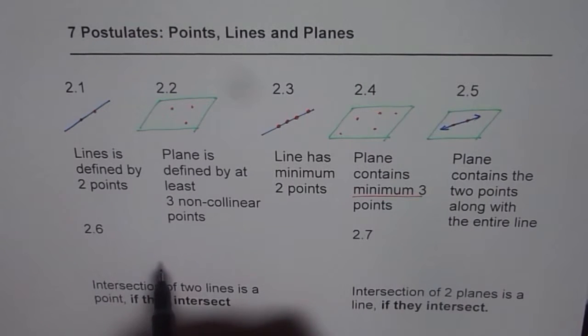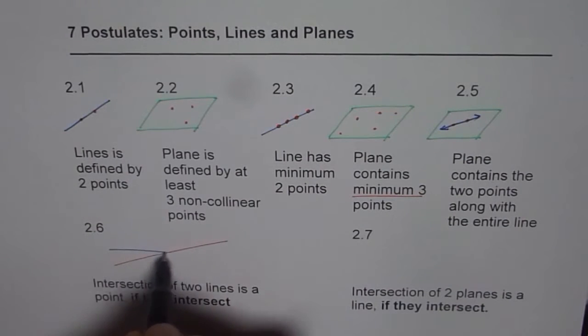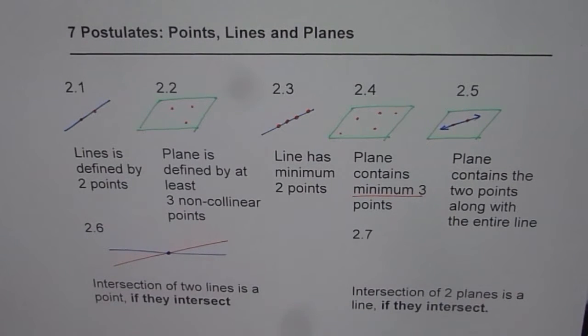Now two lines may or may not intersect, that is very important to understand. But in case they intersect, in that case they intersect always in one point. So that is what it is, they intersect at one point.